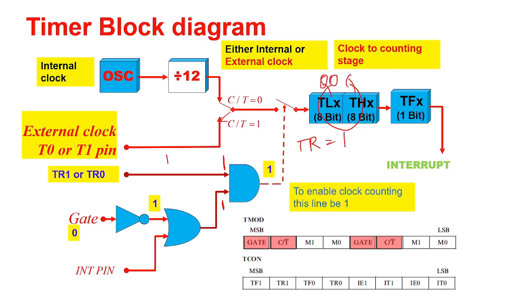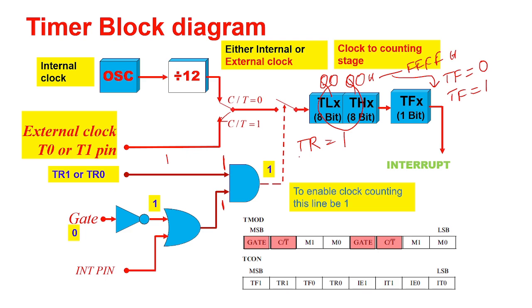Suppose the timer is loaded with 0x0000. It will count up to 0xFFFF — this is a 16-bit timer, Mode 1. During counting, the timer flag will be 0. Once it reaches 0xFFFF, there is an overflow and the flag will change to 1. To start the timer counting pulses, the TR bit must be set.